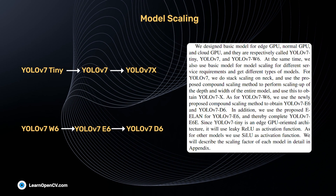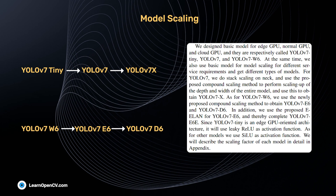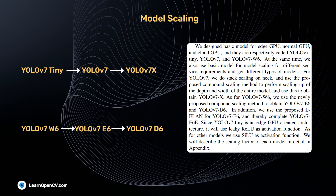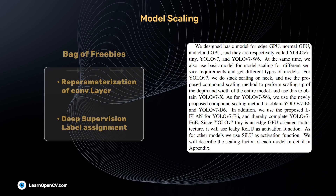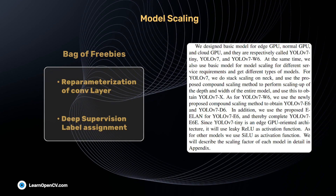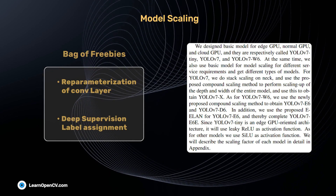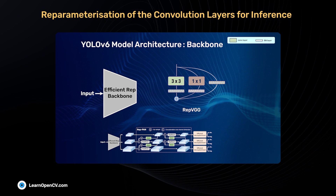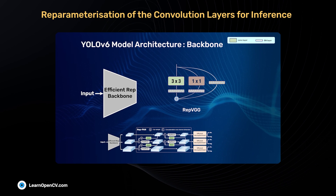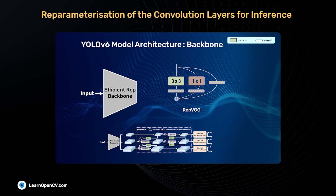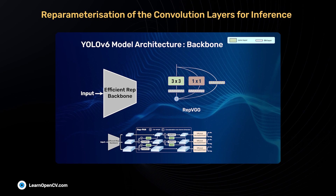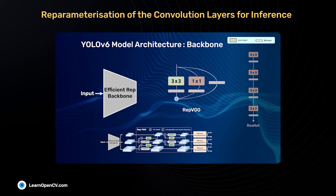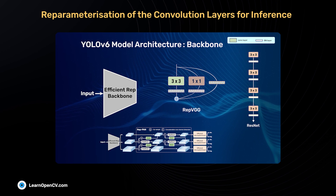In addition to the architectural reforms, the training process is also optimized — this is named the bag of freebies. One such optimization is the re-parameterization of the convolution layers for inference. We have explained this topic in our previous video on YOLO v6 object detection.